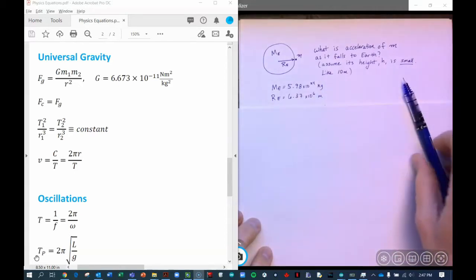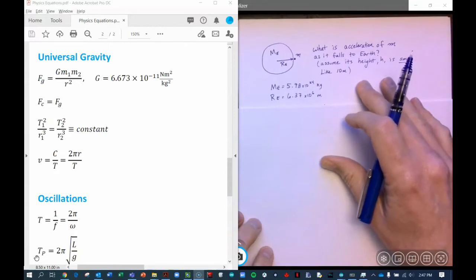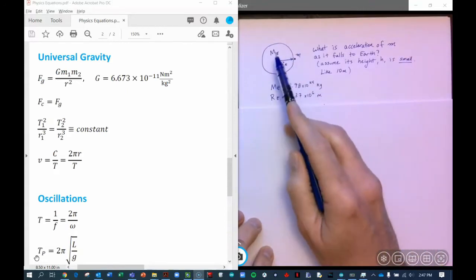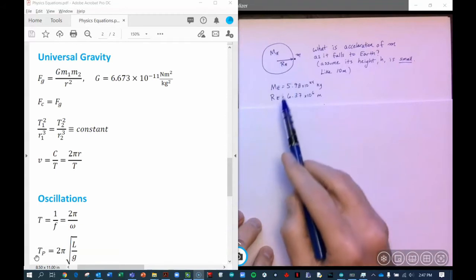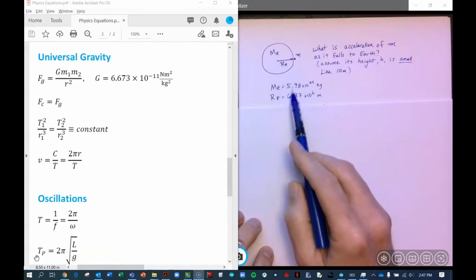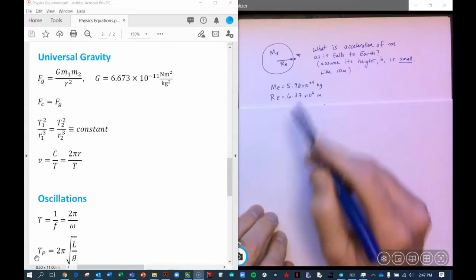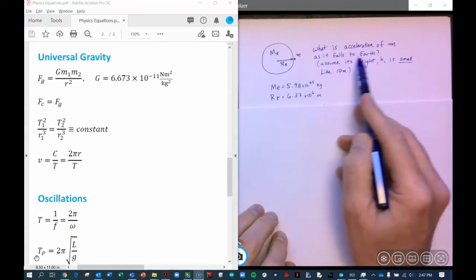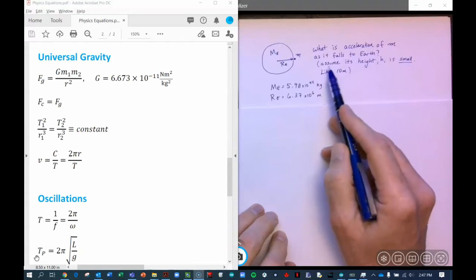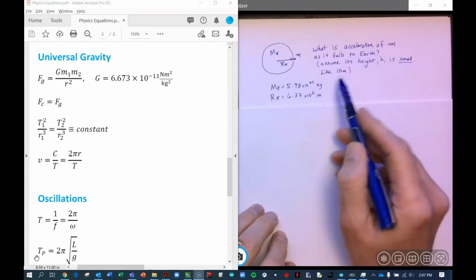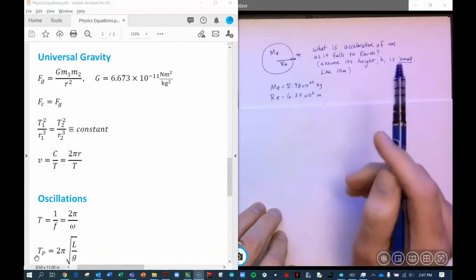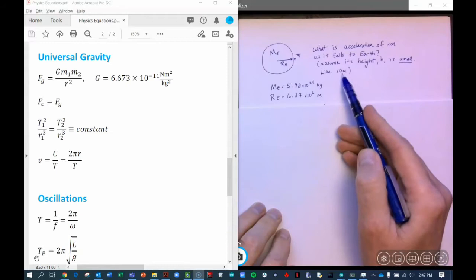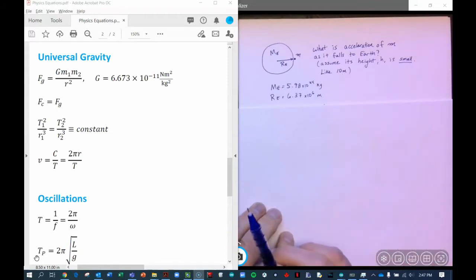I usually introduce this when we talk about gravity because the numbers are so large. For example, if we have the Earth here, the mass of the Earth and the radius of the Earth, and these numbers are given and we can look those up in a table, what is the acceleration of a mass, little m, as it falls towards Earth? And assume that the height is small, something like 10 meters, or really anything under 10,000 meters would be small compared to the radius of the Earth.